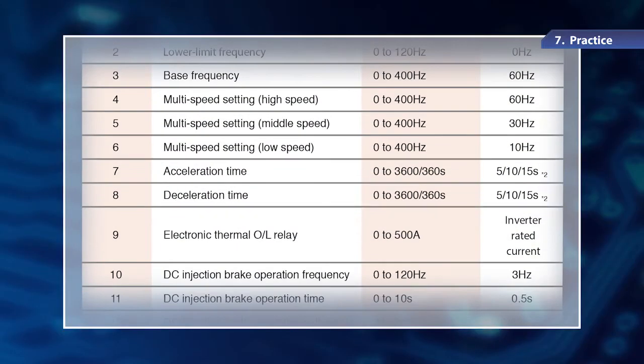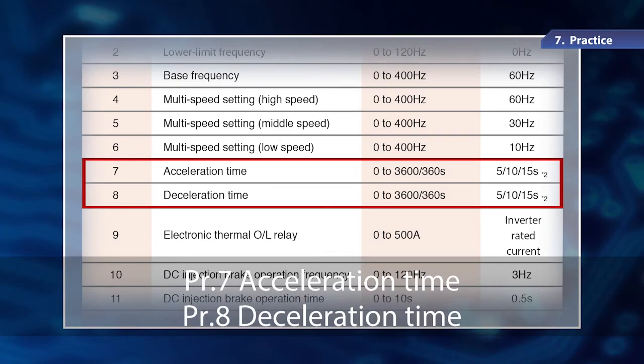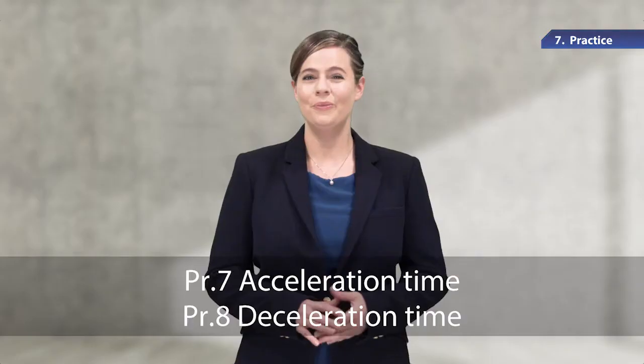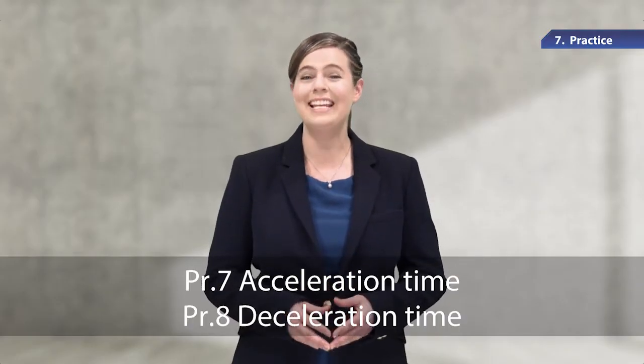As a useful inverter function, I'd like to show you the parameters to set the acceleration time and deceleration time to start or stop the motor. Parameter 7 is for acceleration time, and parameter 8 is for deceleration time. We are going to use these settings and the belt conveyor introduced in Chapter 1 as an example.